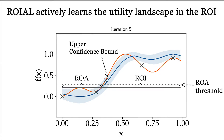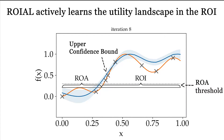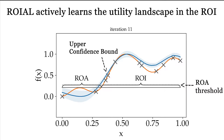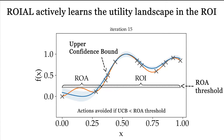Initially, ROYLE samples widely across the action space. After iteration 5, ROYLE stops querying points in the region of avoidance because in that area the posterior upper confidence bound falls below the region of avoidance threshold.